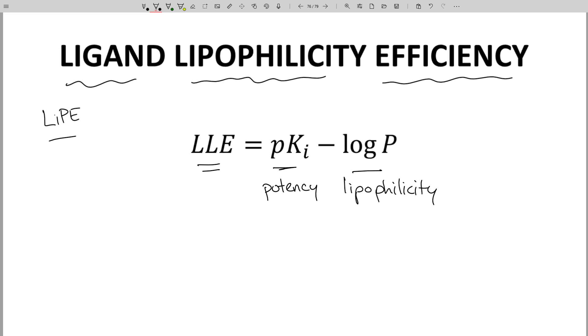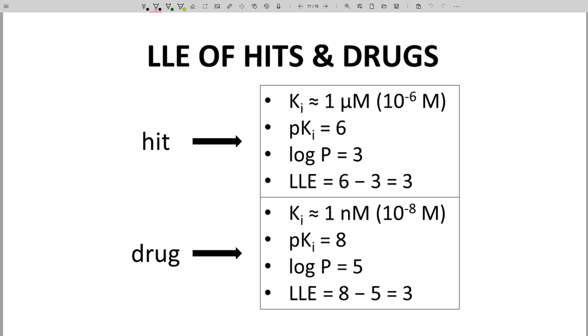Let's see how this equation works on a couple examples. Let's calculate the LLE of two model compounds, a typical hit and a typical drug. A typical hit has a potency of around 1 micromolar. Let's say Ki is 1 micromolar or 10 to the minus 6 molar. So LLE equals 6 minus 3, which equals 3.